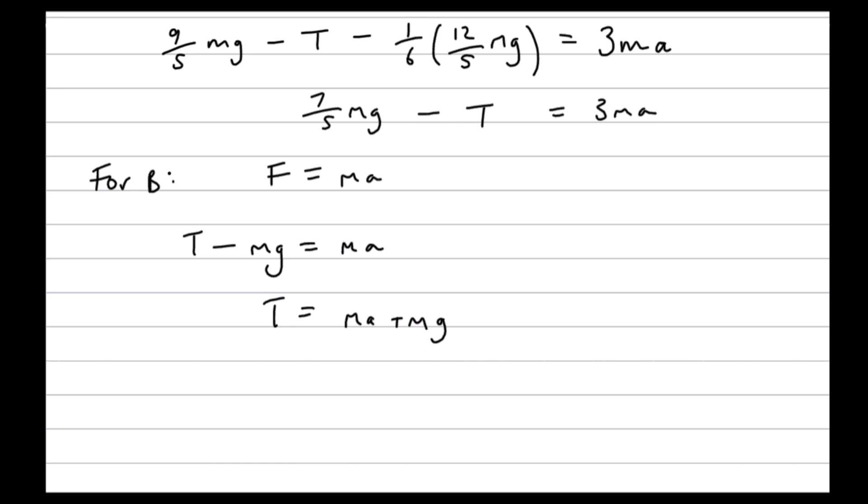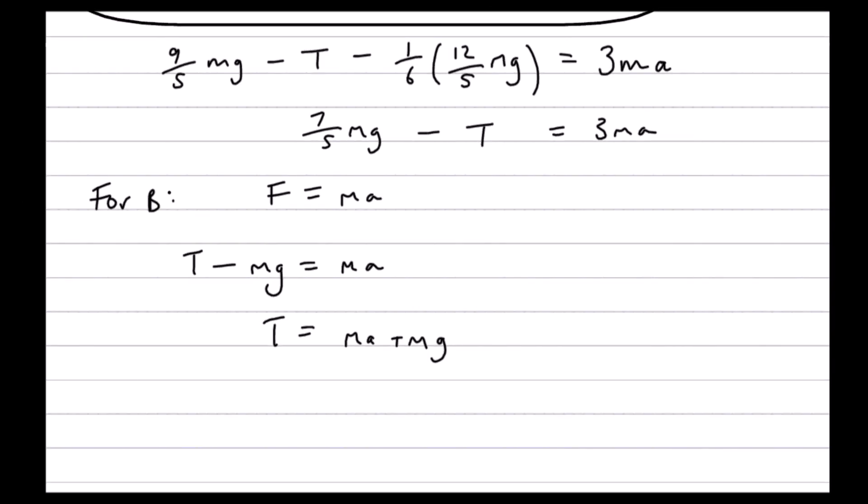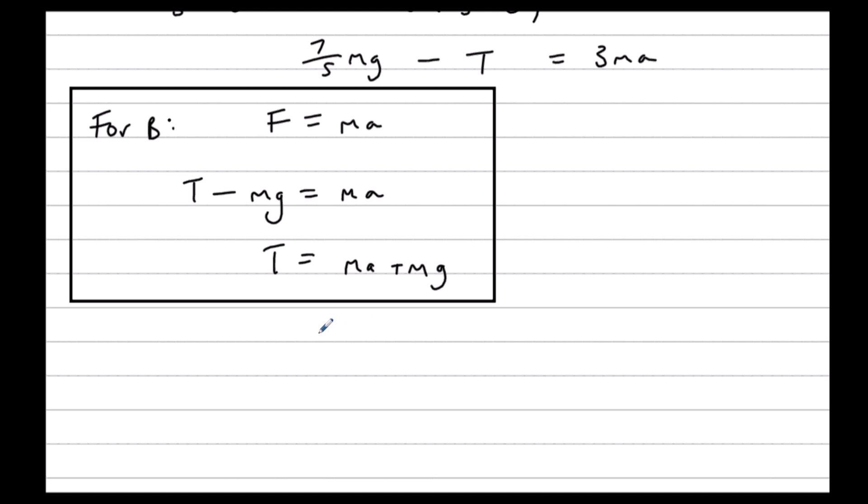So we have seven-fifths mg minus tension, which is ma plus mg, equals 3ma. So seven-fifths mg minus ma minus mg equals 3ma. It's like expanding a bracket over minus one.